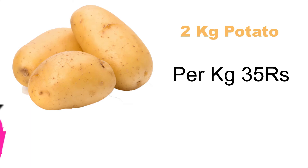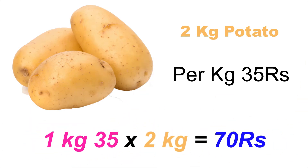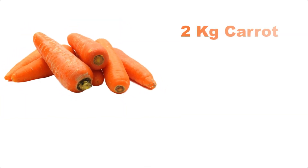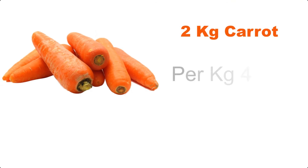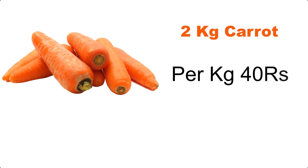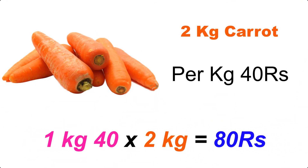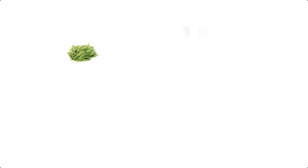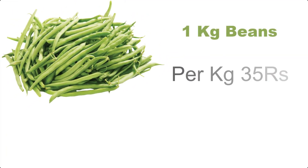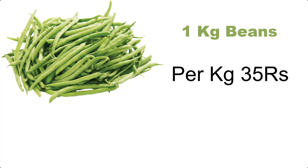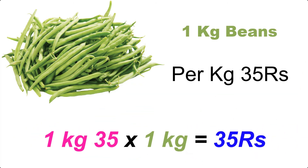2 kg carrot at 40 rupees per kg: 40 multiplied by 2 equals 80 rupees. 1 kg beans at 40 rupees per kg: 40 multiplied by 1 equals 40 rupees. Half kg beetroot at 40 rupees per kg: 40 multiplied by half equals 20 rupees.